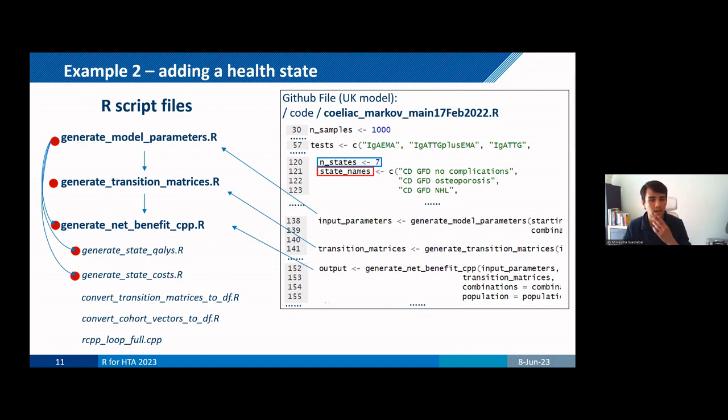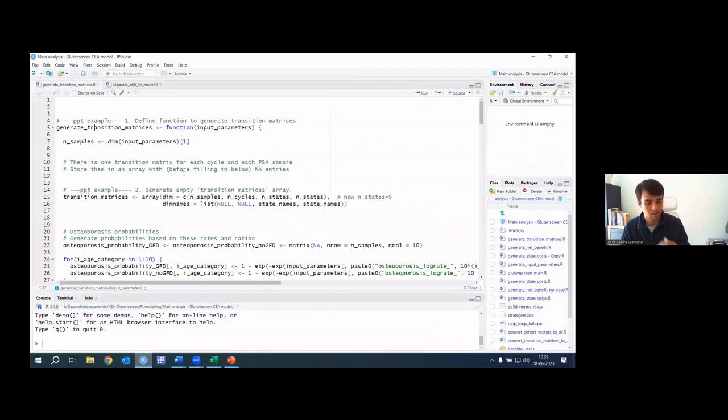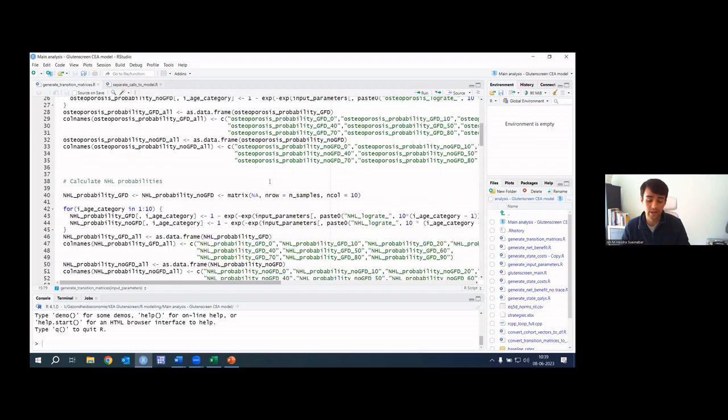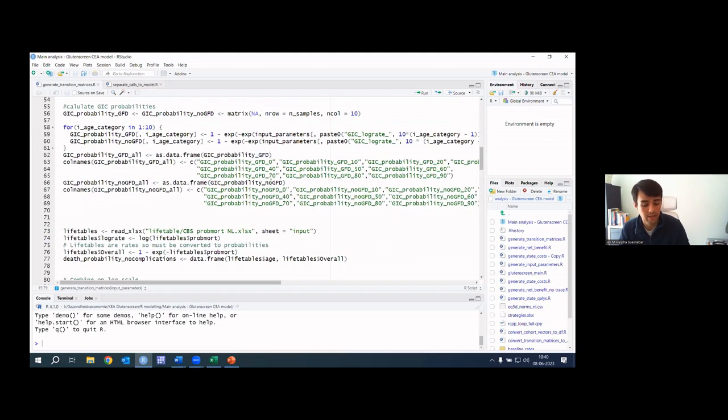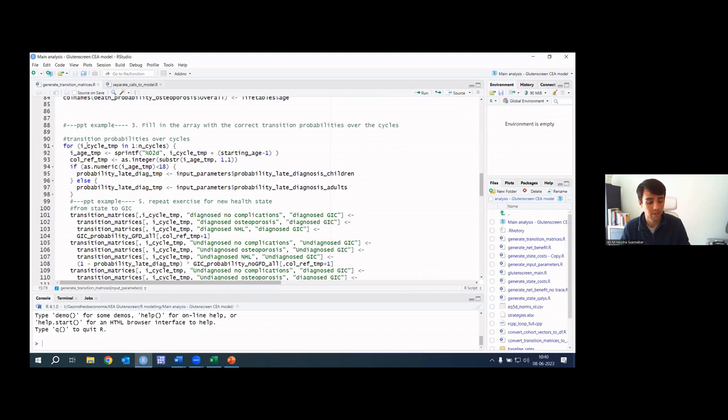So now I'll share how we adapted the code for the transition matrices. So this is the script to generate the transition matrices. And here we define the function. And then early on, we defined this empty array with the dimensions of n samples and cycles and two times the number of states. And like I said, we don't worry much about the number of states because that's not a hard coded number. But the aim here is to complete this empty array with the correct transition probabilities at the correct cycles. So I'll skip to that here. This is where we're looping, where we loop over the cycles.